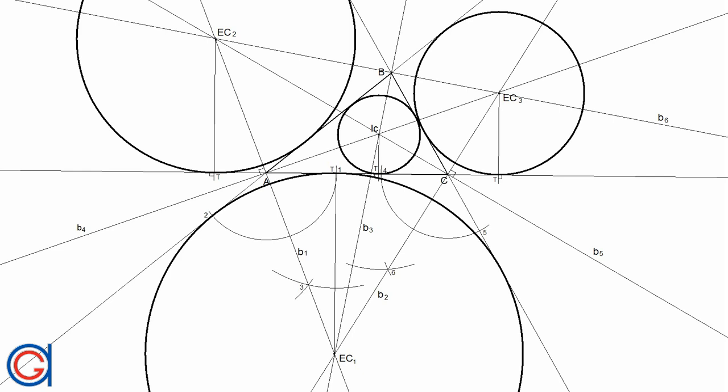The center of the in-circle is called the in-center. An x-circle of the triangle is a circle lying outside the triangle, tangent to one of its sides and tangent to the extensions of the other two sides. Every triangle has three distinct x-circles. The center of an x-circle is called the x-center.